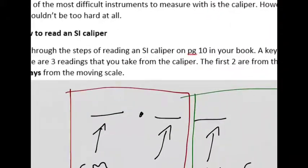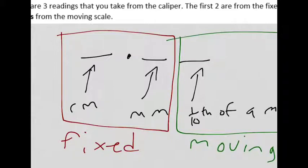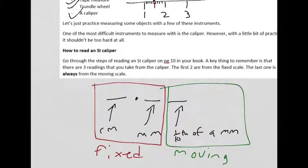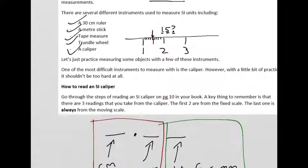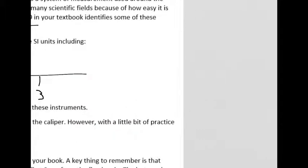So with an SI caliper, what we do is we have two different scales that we read our measurements from. We have something called a fixed scale, which basically looks like a ruler. I'll draw a little diagram here. So you have the fixed scale, and it looks like your standard ruler. You have the centimeter ticks, and then you have the millimeter ticks in between.